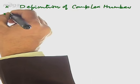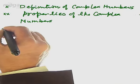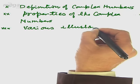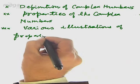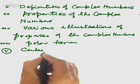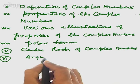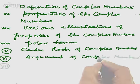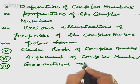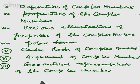The topics we will cover are: definition of complex numbers, properties of complex numbers, various illustrations of those properties, polar form, cube roots of complex numbers, argument of complex numbers, and geometrical representation of complex numbers. These are the various points on complex numbers which we are all going to study.